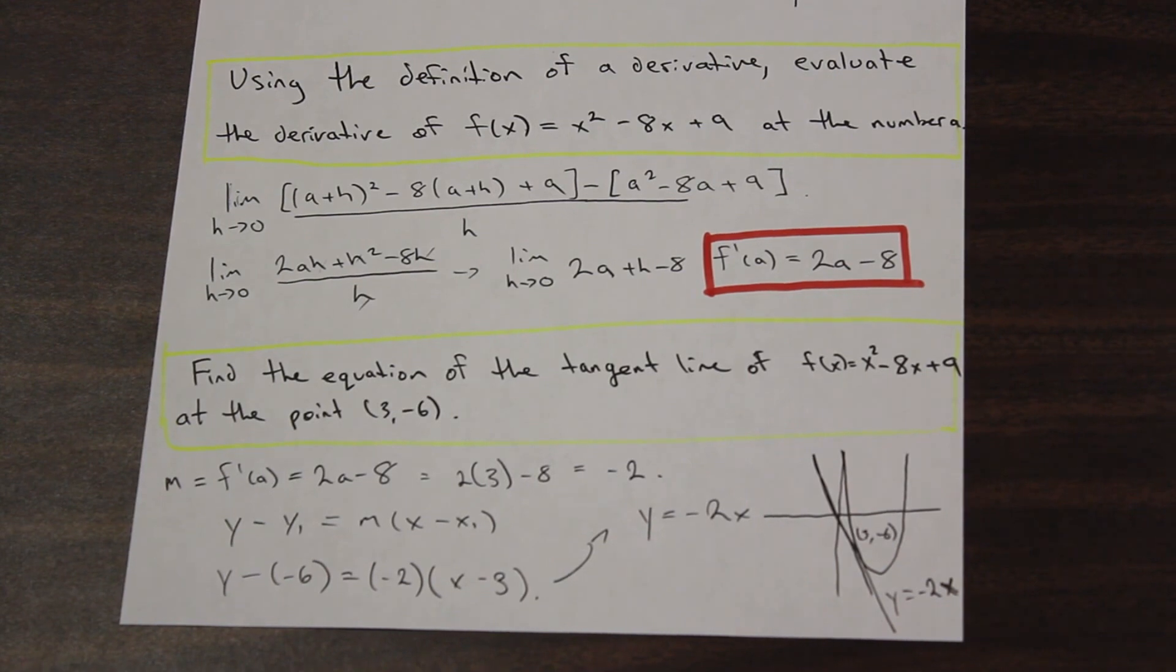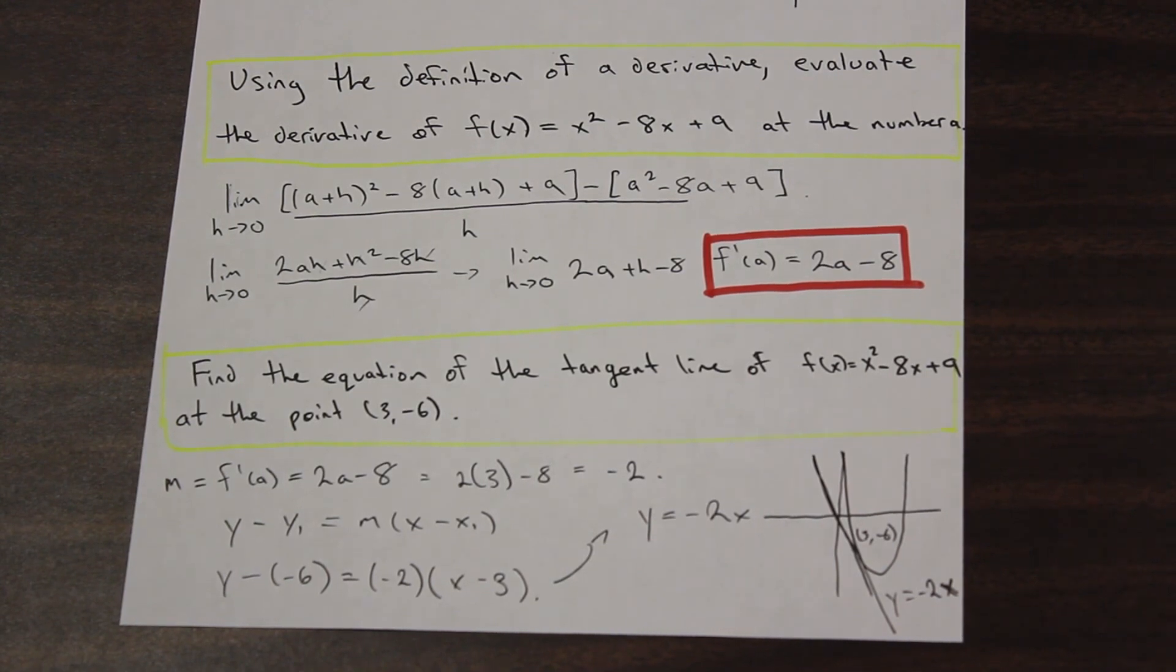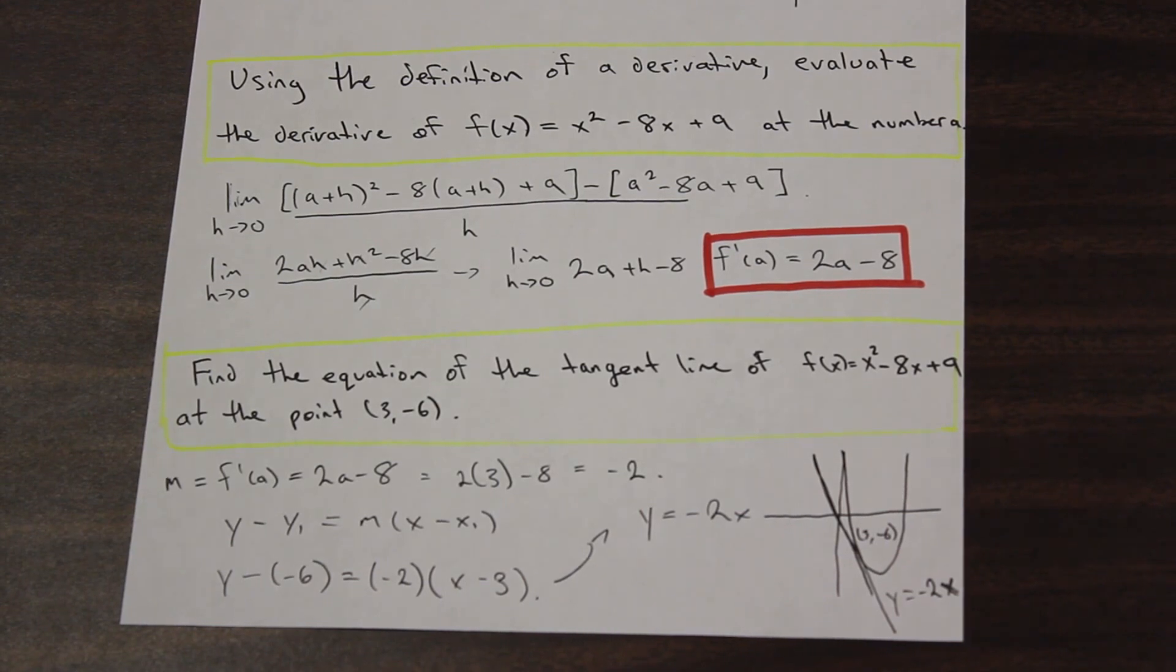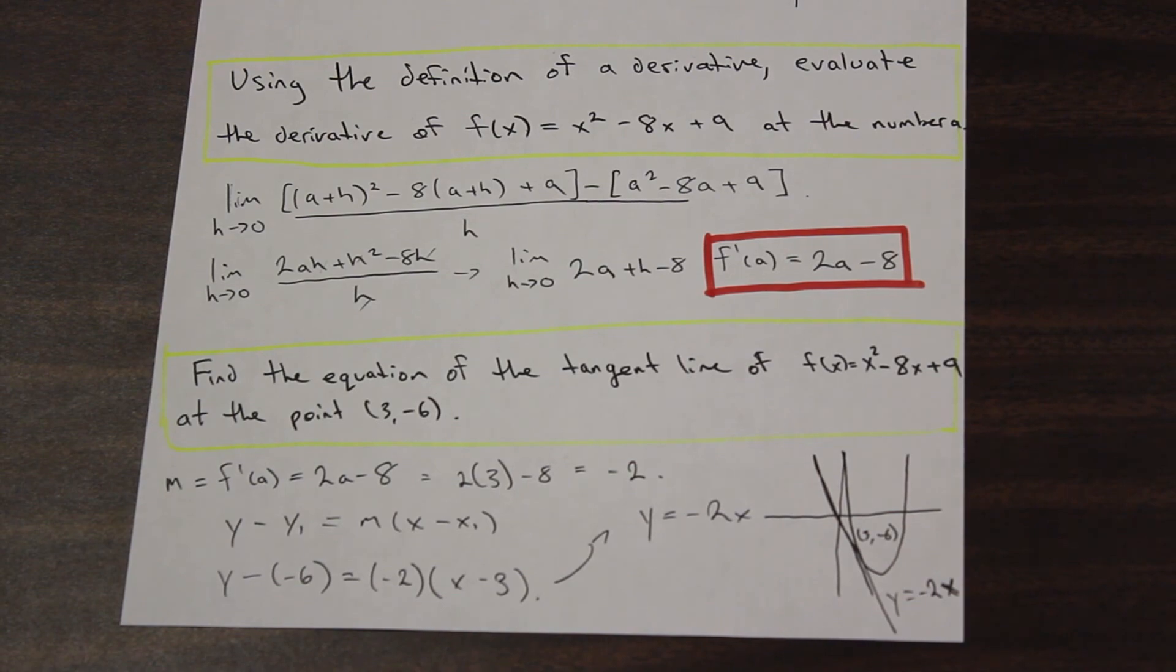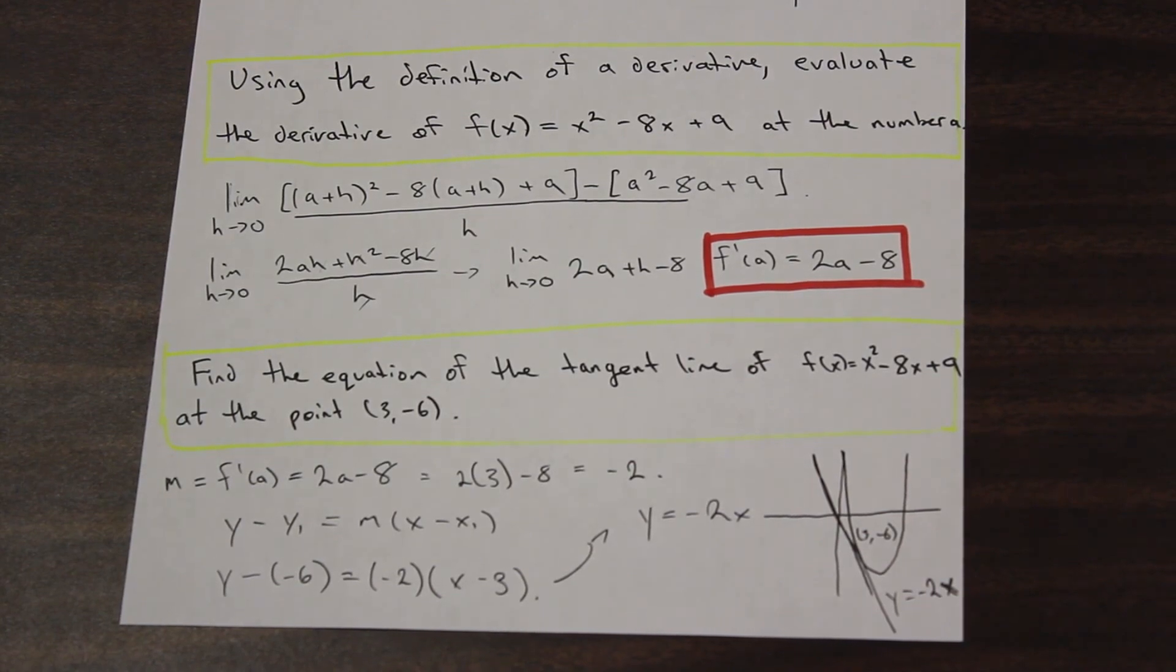So that's it. We solved a rather simple problem, I would say, for the definition of a derivative. This is something that you could expect in your first or second midterm for calculus one in university. It's not too complicated. Do a couple practice problems on this. In the next section, we're going to go over some of the more simple rules for finding derivatives, some of the shortcuts, but you need to know this in order to understand that. So thanks for watching.